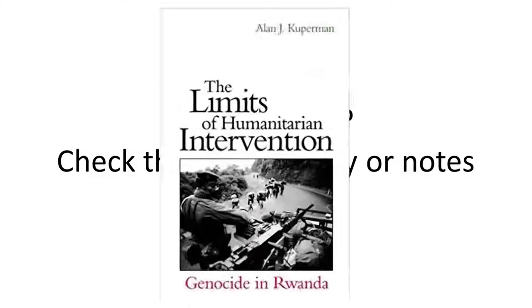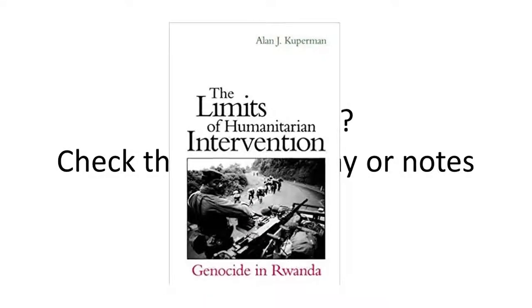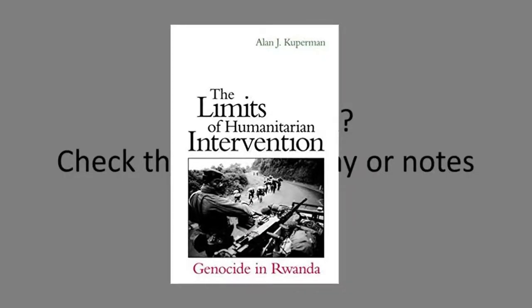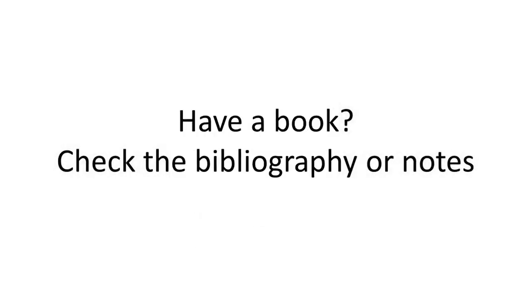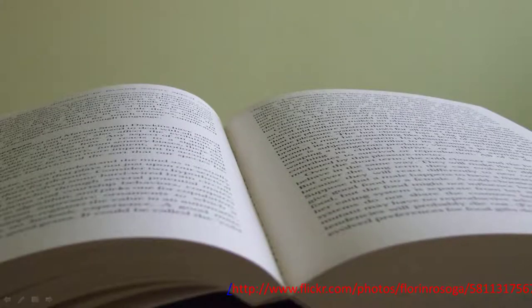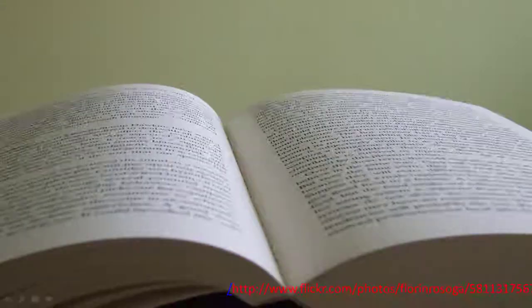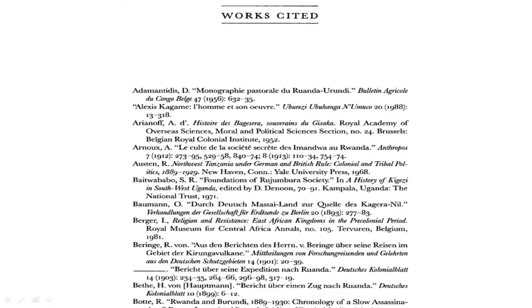Say you've found a good book on your topic — in this case, The Limits of Humanitarian Intervention by Alan Cooperman. Many books contain bibliographies, notes, or a list of works cited that will point you to resources that the author used when researching the book. If the book is relevant, chances are some of the resources in those lists will be as well.